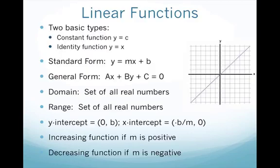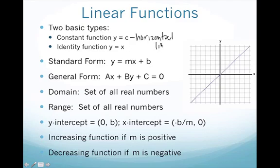So the first function — you guys know this — it's a linear function. There are two basic types of linear functions. One is a constant function, and this is just going to be where y equals a number. Any constant you can think of, this will always be a horizontal line, because it is just the line y equals a number. So for example, the line y equals three would be the line going through here, and that would be a constant function.